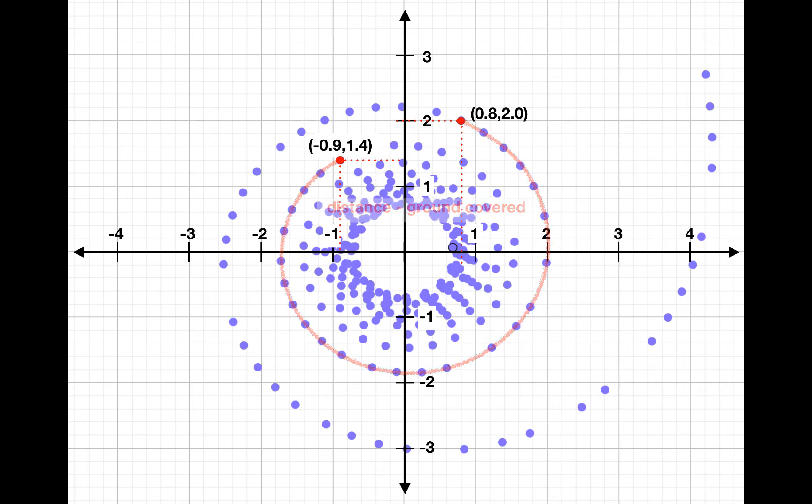Meanwhile, displacement in one dimension was defined as a change in position, and the same is true in more than one dimension. If we use those same two points as an example, the displacement would be the straight line distance between the two points, along with the direction of motion between the two points. Here you see that I've used an arrow to indicate the displacement.